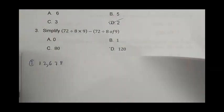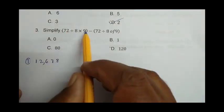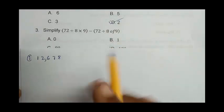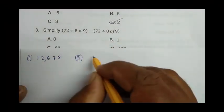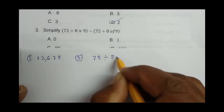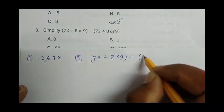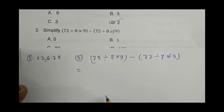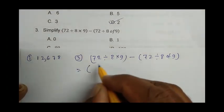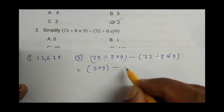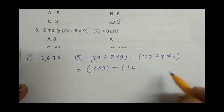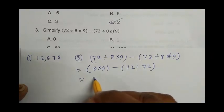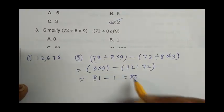Question number 3: Simplify (72 ÷ 8 × 9) - (72 ÷ 8 of 9). From BODMAS rule, we know that we divide first. So it becomes 9 × 9, which is 81, minus 72 ÷ 72, which equals 81 - 1 = 80. So C is the right answer.